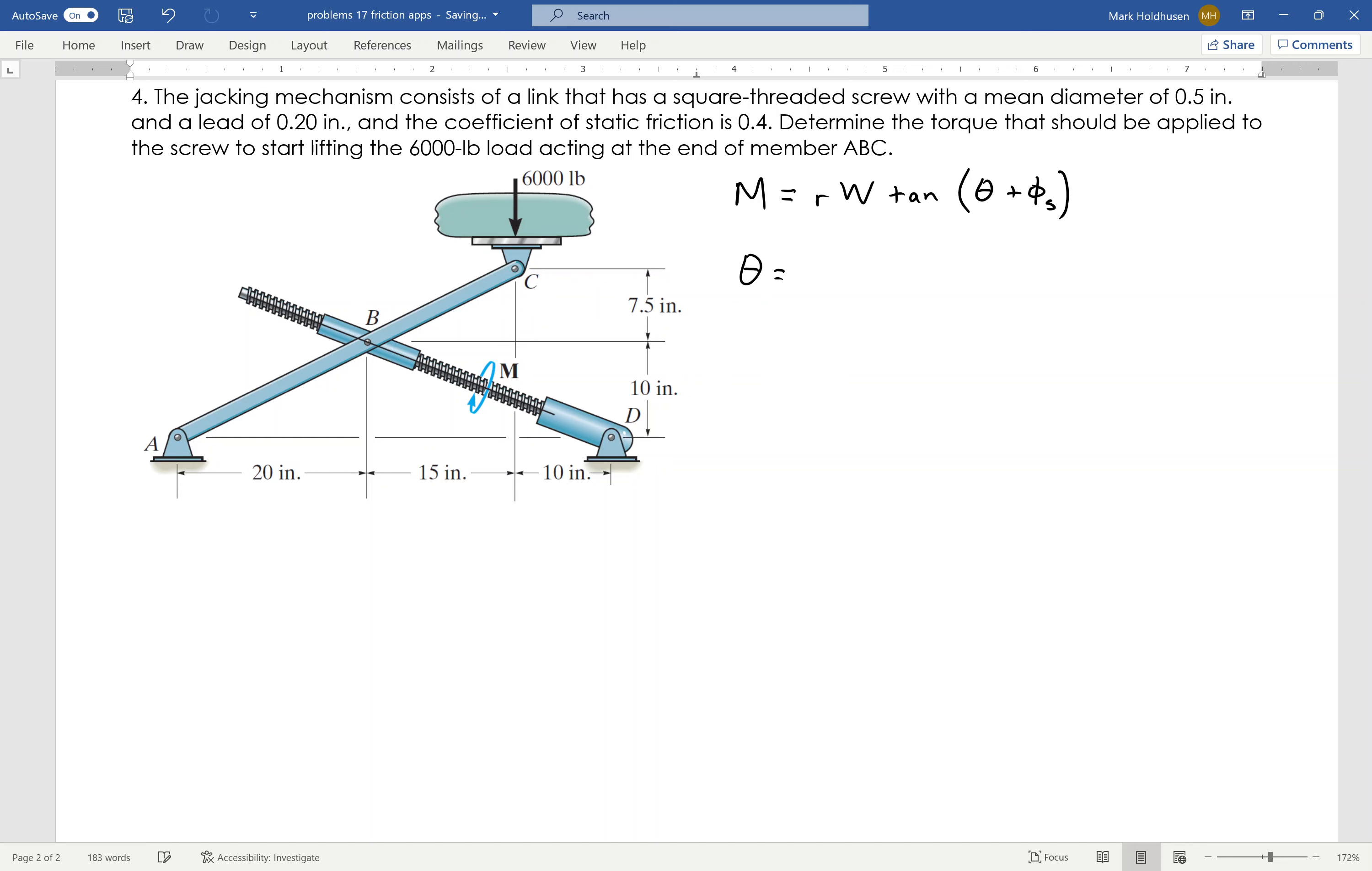And theta, of course, is the lead angle, which will be the inverse tangent of the lead, which is 0.2 inches. And the diameter is 0.5 times pi to give me that circumference, gives me the angle of that incline of the screw to be 7.26 degrees.